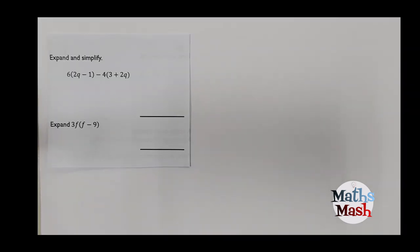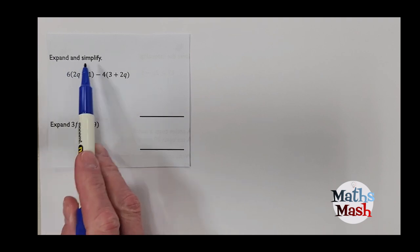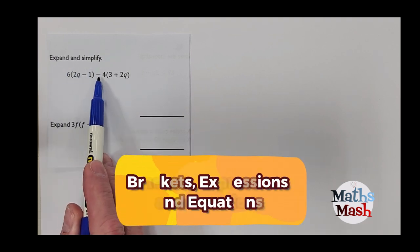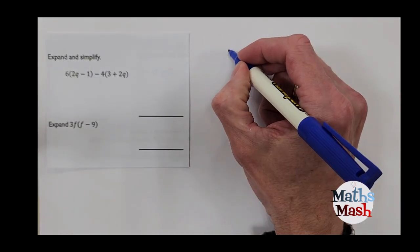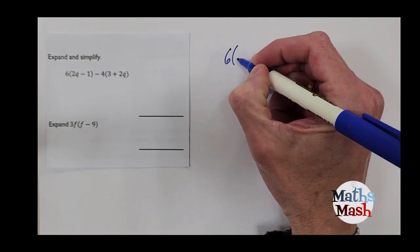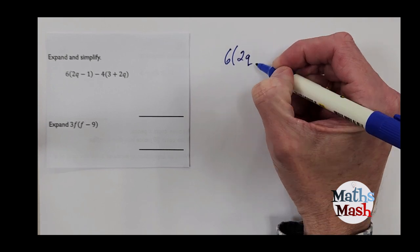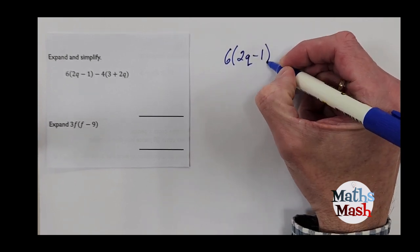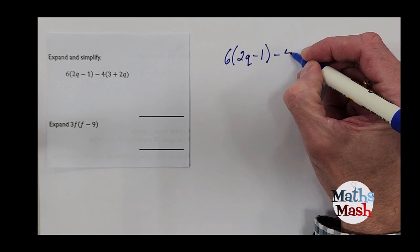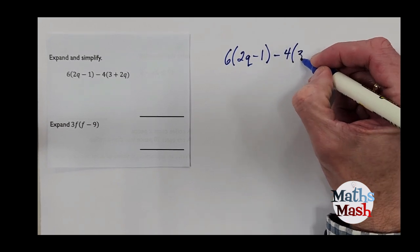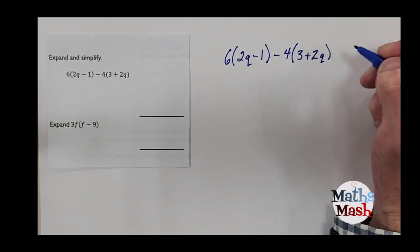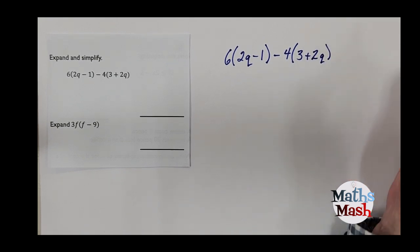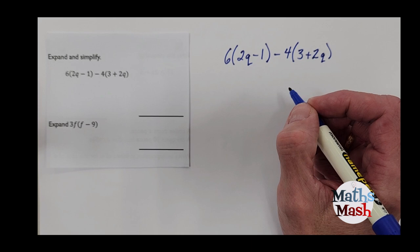Okay, the next one says expand and simplify. So this is a little bit more than the previous question. Again we have a 6 and then bracket and then 2q minus 1 subtract 4 bracket 3 plus 2q. Okay, so again I'm just going to write that out a little bit bigger. And again I'm going to multiply the numbers outside the brackets by everything inside the brackets.